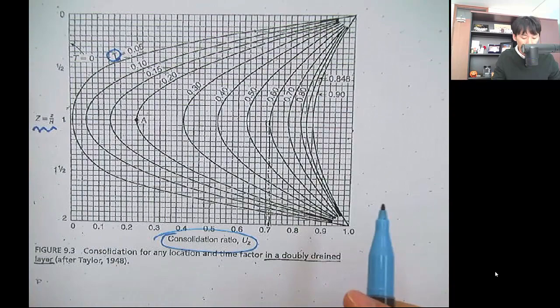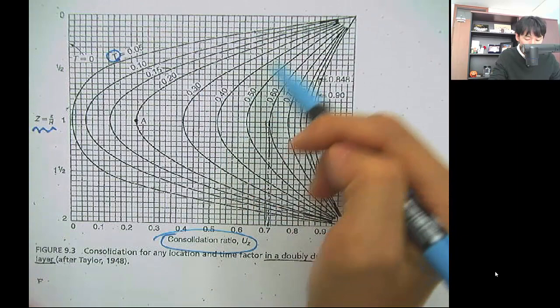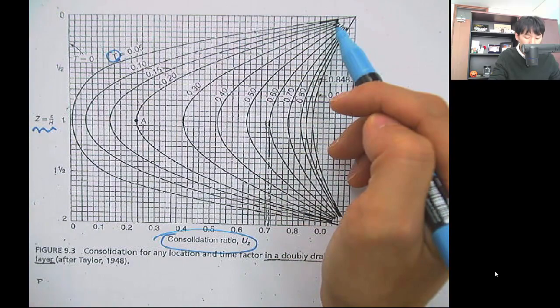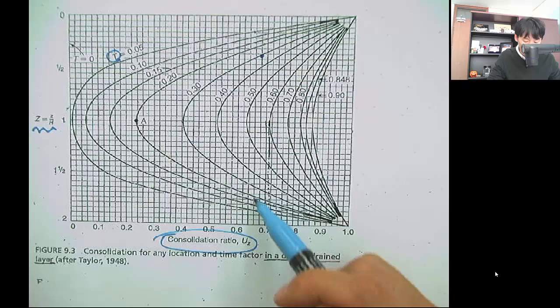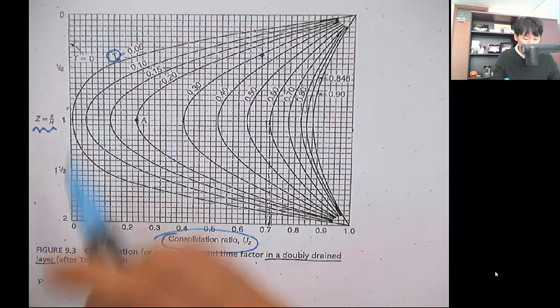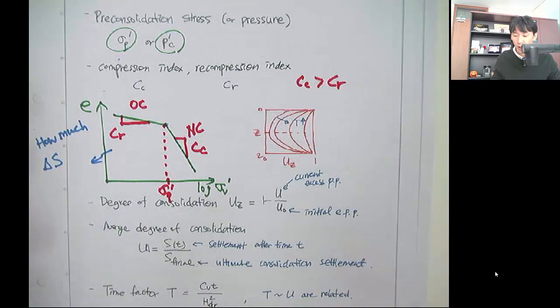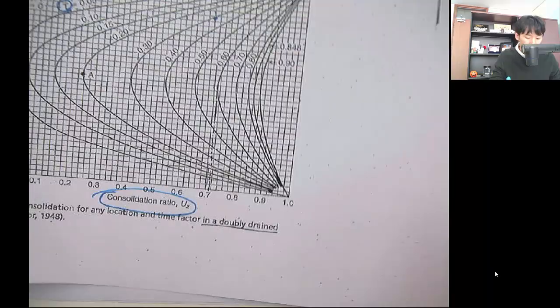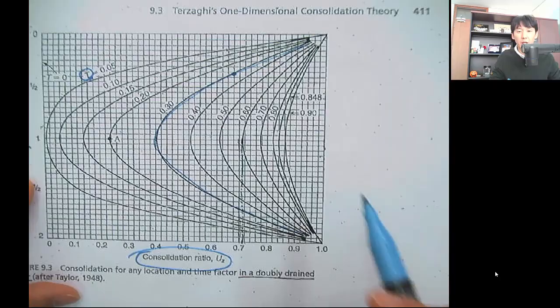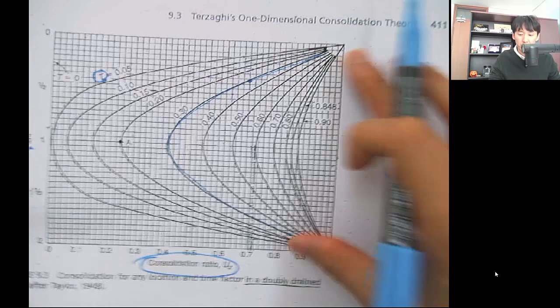The isochrone curve tells you the consolidation ratio along the depth for a given time factor T and depth. For example, when the time factor is 0.3, the degree of consolidation over the clay layer distributes such that in the middle it's about 40%, and at the quarter point it's about 65–67%. Using this curve you can estimate the degree of consolidation along the depth for a given time of interest. There is also the average degree of consolidation, obtained by integrating the curve along the depth to get a single number for the whole clay layer — that's called U_avg or capital U.